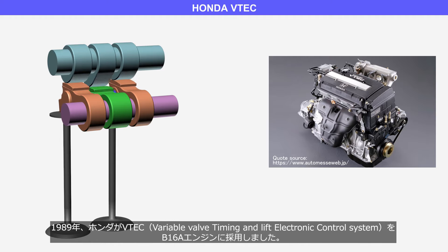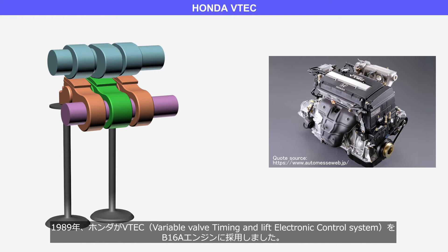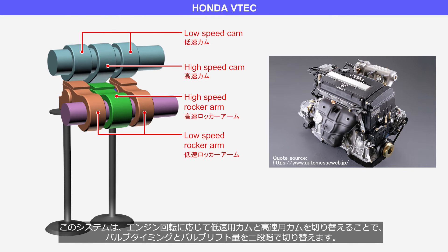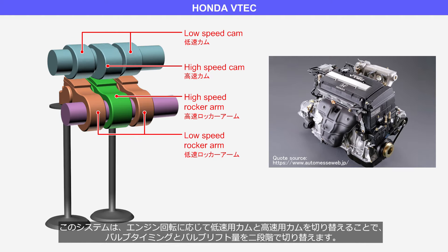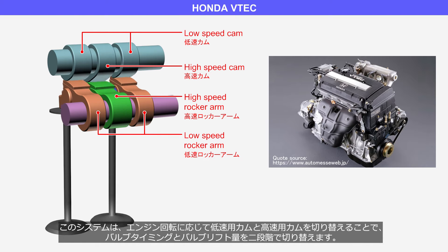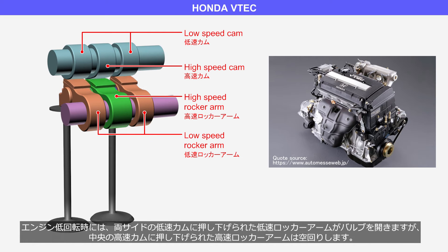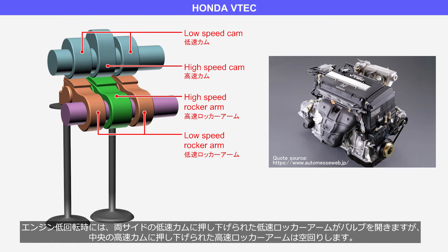In 1989, Honda adopted the VTEC, Variable Valve Timing and Lift Electronic Control System, for the B16A engine. This system switches between a low-speed cam and a high-speed cam in response to engine rotation, enabling a two-stage switch of valve timing and valve lift. During low engine speeds, the low-speed camshaft pushes down the low-speed rocker arms, then the low-speed rocker arms open the valves. The high-speed rocker arm is pressed down by the high-speed cam; however, the high-speed rocker arm idles without engaging.